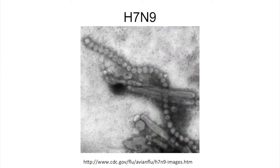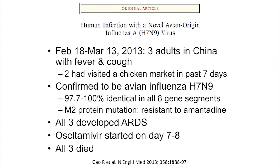Now I want to move on to a newer avian flu strain getting more attention: H7N9 influenza. This story started in February and March of this year when three adults in China presented with fever and cough; two of the three had visited a chicken market the week before symptom onset. These patients were confirmed to have a new H7N9 strain — all eight gene segments were identical — and all had an M2 protein mutation conferring resistance to amantadine. All three developed severe respiratory disease, were started on oseltamivir, but got worse and died.